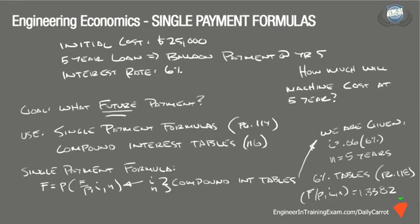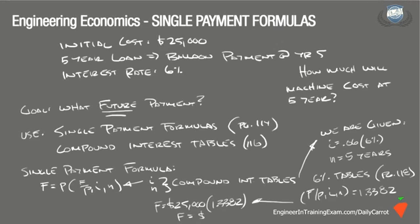We find that F/P at 6%, N=5 is equal to 1.3382. Plugging this value into the equation, we get a future value F equal to $25,000 times 1.3382, which equals $33,455. So the equivalent future value balloon payment for the $25,000 loan at a 6% annual interest rate is $33,455.